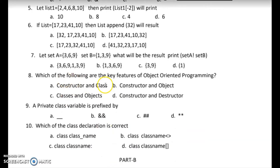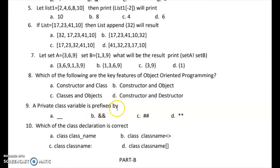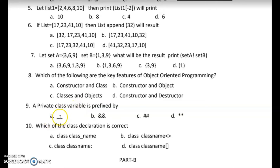Question 8: which of the following are the key features of object-oriented programming? The answer is classes and objects. Question 9: a private class variable is prefixed by what? The answer is double underscore — the prefix is double underscore for a private class variable.